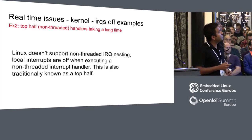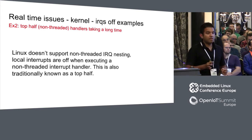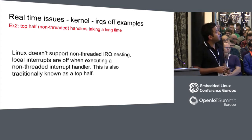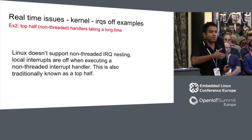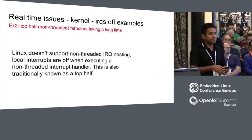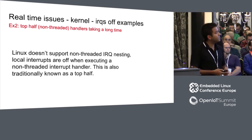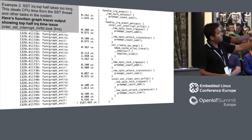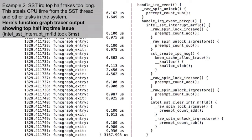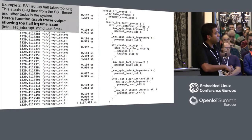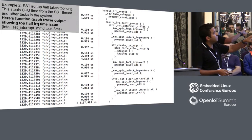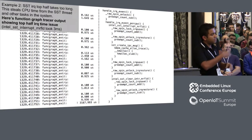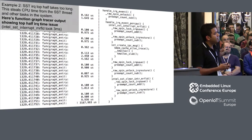The second example is a top half taking a long time. These are non-threaded handlers. With non-threaded handlers, since there's no nesting support, if the handler takes a long time, interrupts remain off for the entire duration. One way to find this is using the function graph tracer. I happened to see that handle_irq_event was taking three milliseconds. The function graph tracer nicely shows you the total time spent.